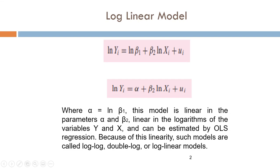In this equation, α is nothing but natural log of β1. This model is linear in the parameters α and β2, linear in the logarithms of the variables Y and X, and can be estimated by ordinary least squares regression. Because of this linearity, such models are called log-log, double-log, or log-linear models.